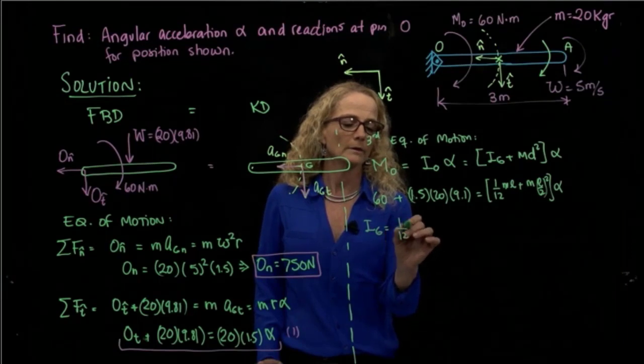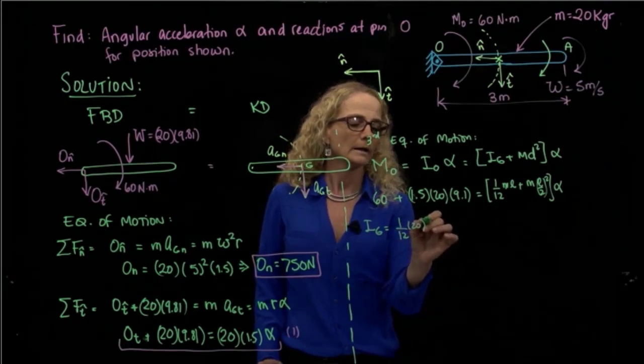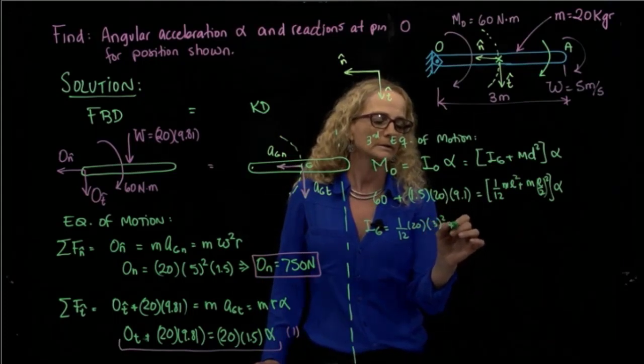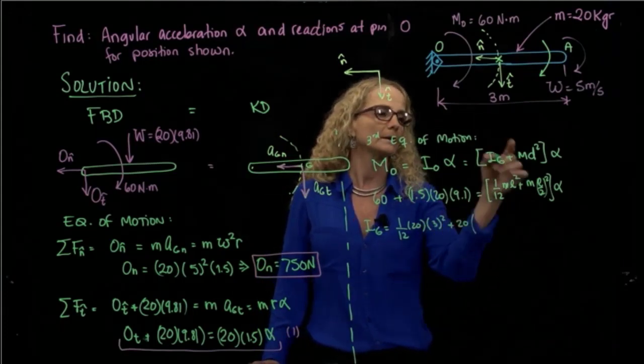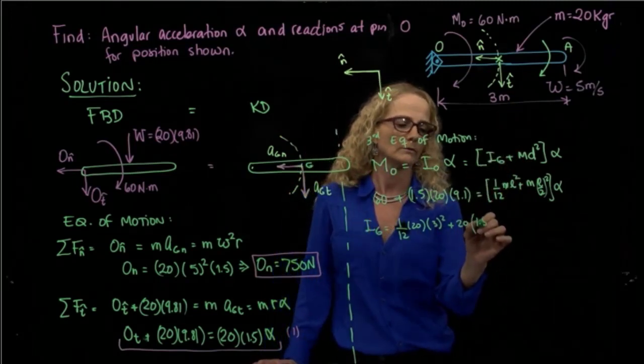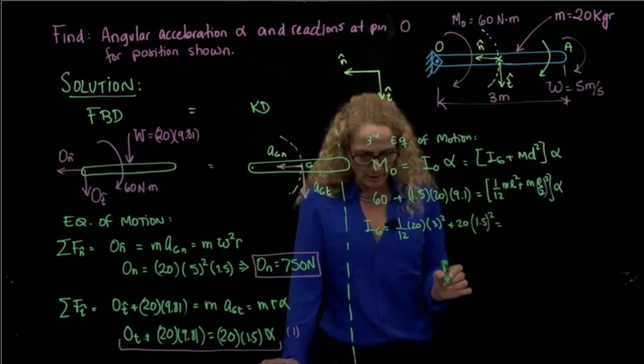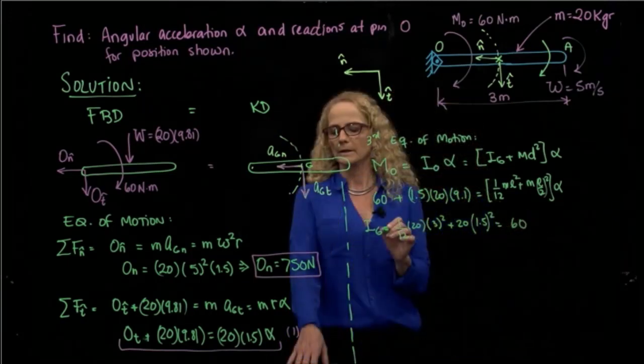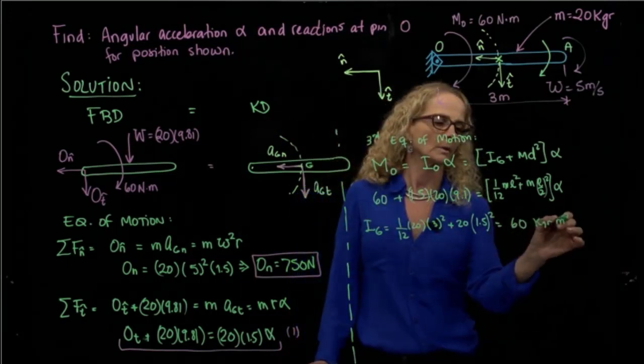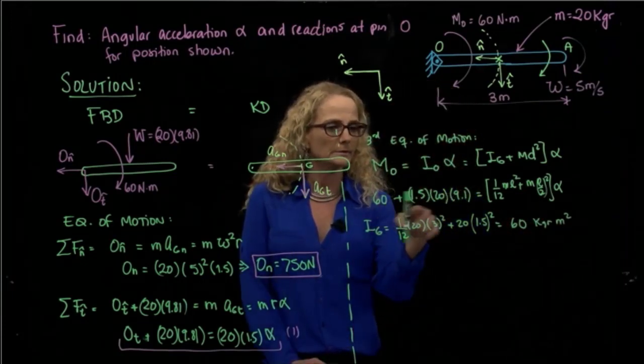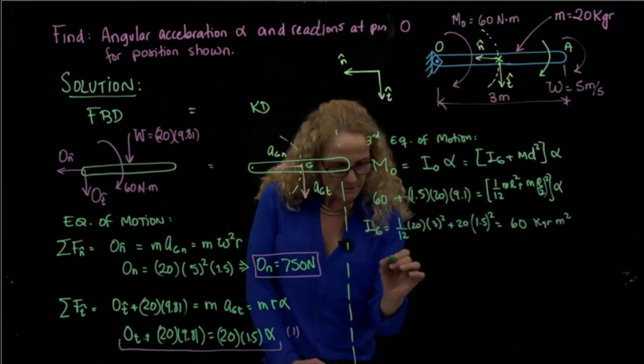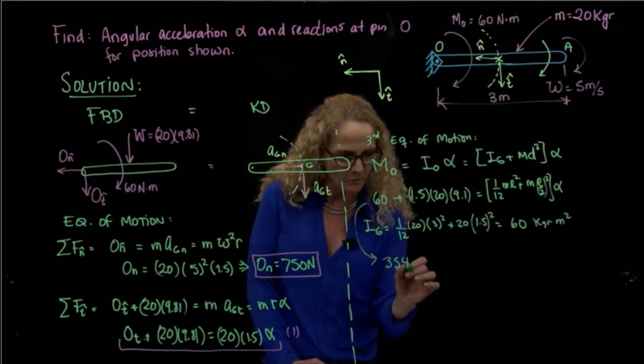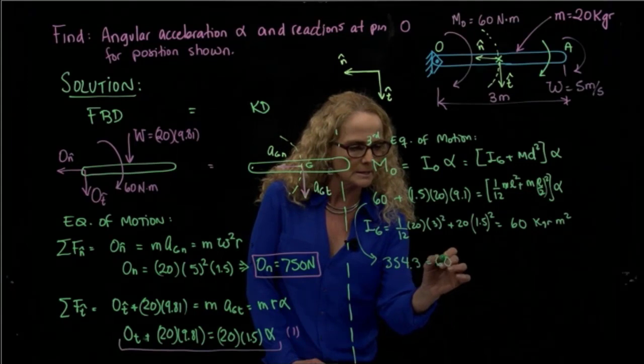Let's calculate that over here. That will be 1/12, the mass and the length squared. The length is 3 squared plus mass, which is 20, plus 1 half, which is 1.5 squared. So when you calculate that, that gives me the value of 60 kilograms per meter squared. So I'm going to calculate all this value right here, which is 354. So that is this equation, 354 equals 60 alpha.